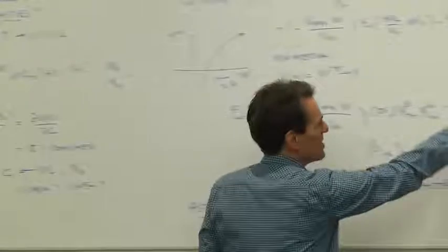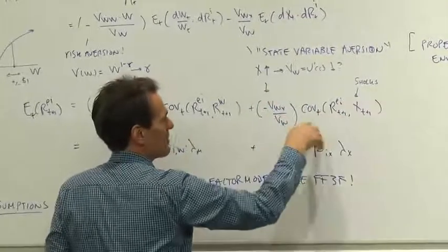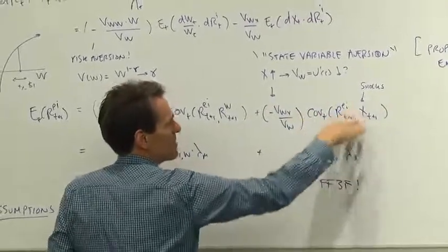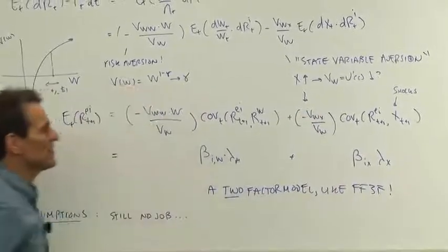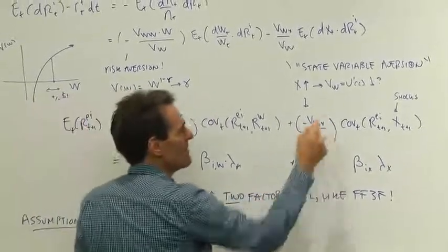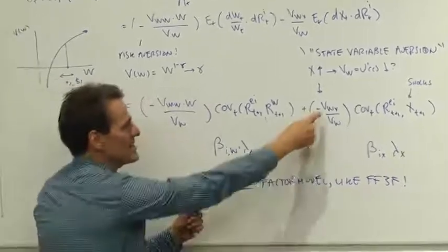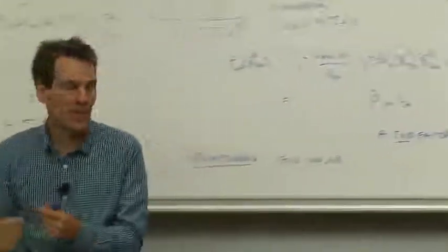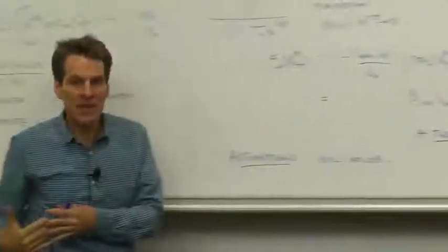What's this quantity here? What drives the pricing effects of betas or covariances on X? Well, VWX over VW, that tells us if X changes, what's the effect on marginal utility? So if you get a big shock to this news, how much does that make you hungrier?